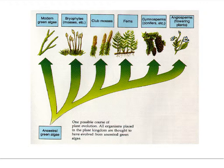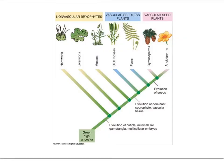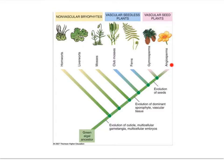The bryophytes, the mosses, have no vascular tissue by which water would be drawn up from the soil, and they have no seeds. The pteridophytes, the ferns, have vascular tissue but like the bryophytes they have no seeds. The coniferophytes have vascular tissue and seeds, but the seed is not well protected. The angiospermophytes have vascular tissue and very well-protected seeds.